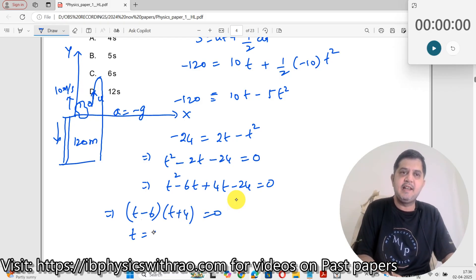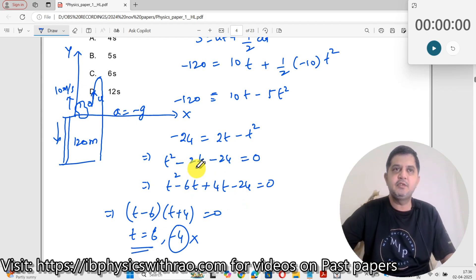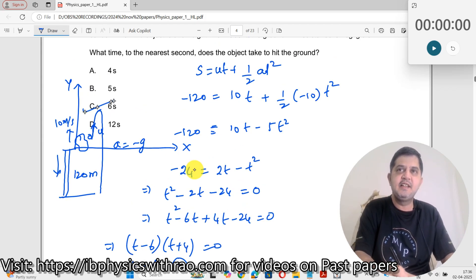Thus you get the values of t as t equals 6 and t equals minus 4. Minus 4 you have to discard because time cannot become negative. t should be equal to 6 seconds. So the answer is C here.